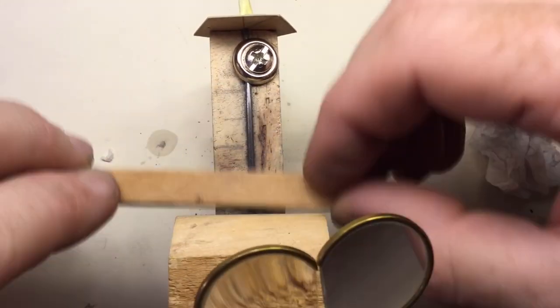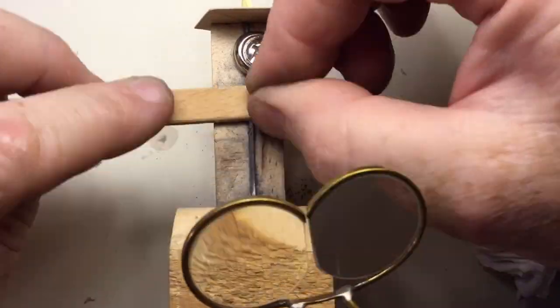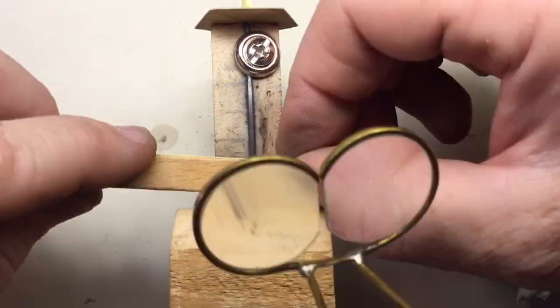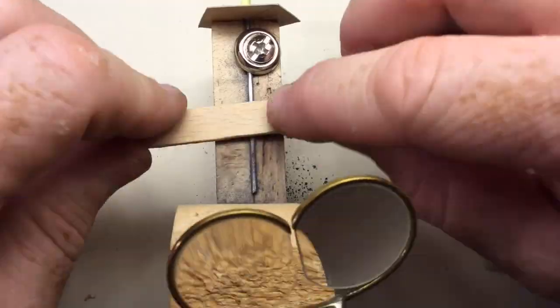It took two and a half sanding sticks to remove all the deep scratches. And those are my homemade binocular magnifiers. They may be the subject for a later video.